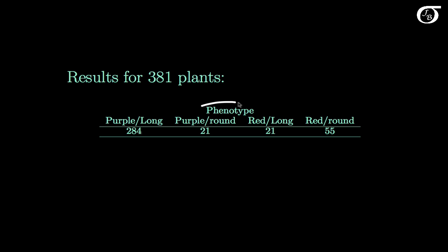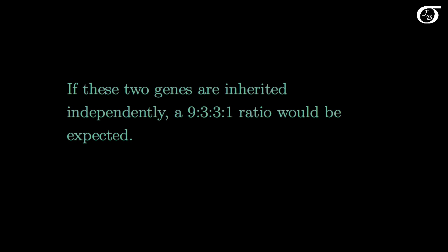There are four possible phenotypes — the observed characteristics of the plant. We had 281 plants with purple flowers and long pollen grains, 21 with purple flowers and round pollen grains, 21 with red flowers and long pollen grains, and 55 with red flowers and round pollen grains. Genetics theory tells us that if these two genes are inherited independently, a 9 to 3 to 3 to 1 ratio would be expected.